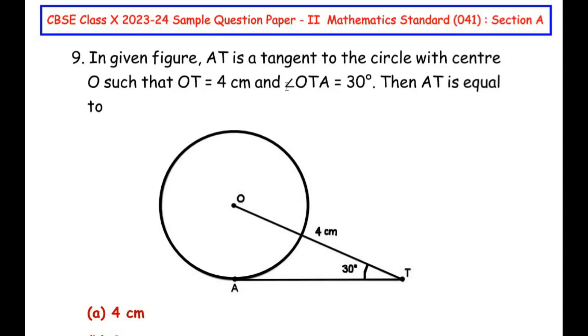So let us understand the meaning of a tangent first. Tangent is a straight line which touches the circle at just one point and then rises off. It will not enter into the circle. It can just touch at one point.